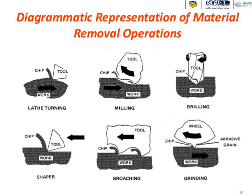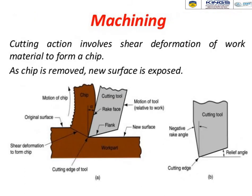The common metal removal operations include lathe turning, milling, drilling, shaping, broaching, and grinding — six common manufacturing metal removal processes. The machining cutting action involves shear deformation of a work material to form a chip; as the chip is removed, a new surface is exposed. The shear region is where the work piece and tool have direct contact. In the diagram, the brown color indicates the work piece and gray indicates the single point cutting tool.